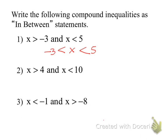Some students asked: what if I write '5 is greater than x, which is greater than negative 3'? By rights it is correct, but we never write it like that because it's not in order of the number line. You will not get credit for that. You must write it from least to greatest: negative 3 is less than x, which is less than 5.